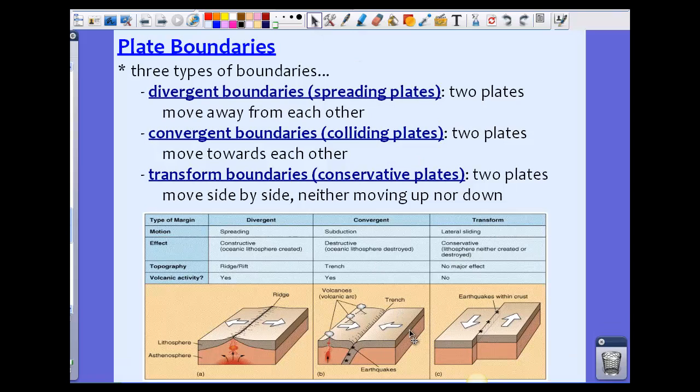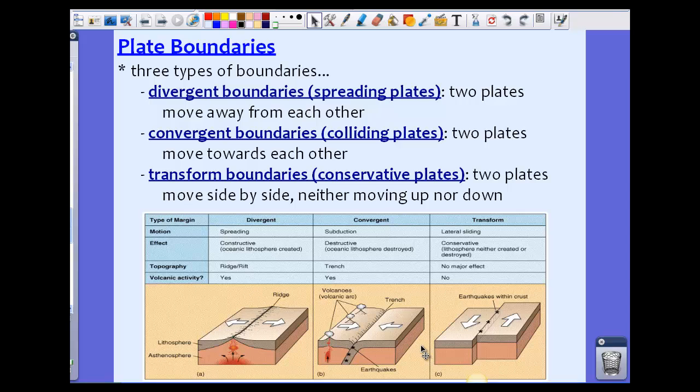During a convergent boundary we have two plates moving towards each other. This picture shows you a subduction zone, where one plate moves underneath another one. We see volcanic activity at these types and it forms a trench, like the Mariana Trench. This is a destructive plate because it's destroying crust. Unlike divergent which creates it, convergent boundaries destroy it.